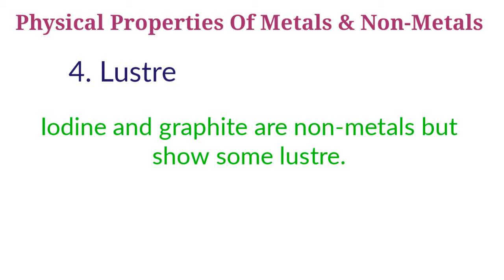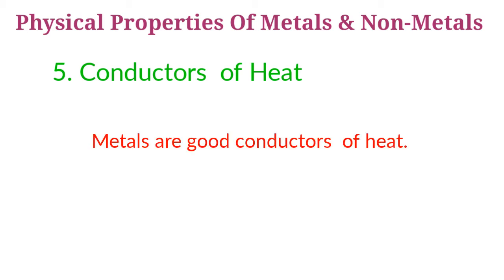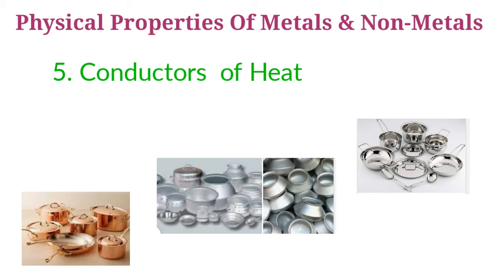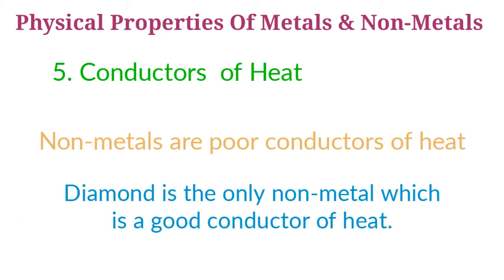Next property: conductors of heat. Metals are good conductors of heat, whereas non-metals are poor conductors of heat. Silver is the best conductor of heat, followed by copper. Aluminium and iron are also good conductors of heat. For this reason, metals like aluminium, iron, and copper are used for making utensils and water boilers. Non-metals are poor conductors of heat. Diamond is the only non-metal which is a good conductor of heat.